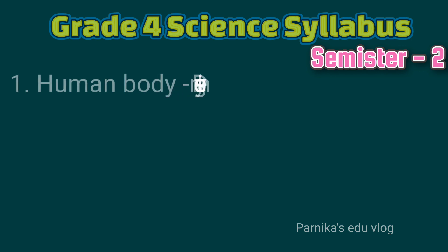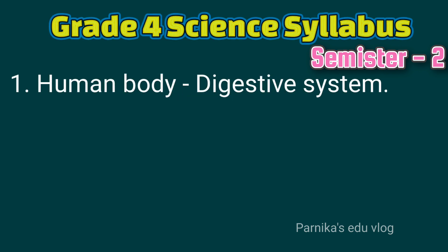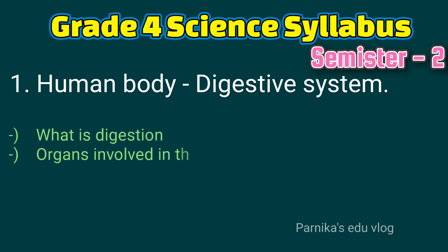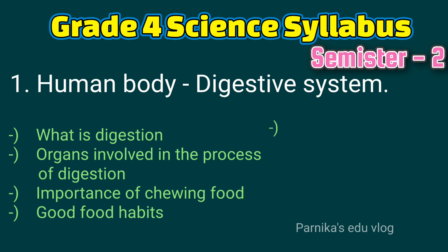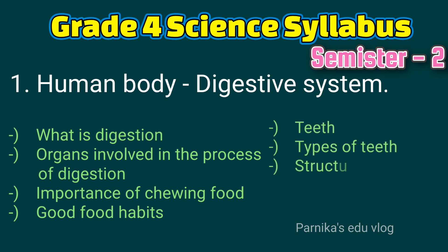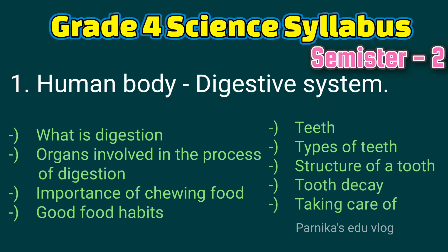The first lesson name is Human Body Digestive System. In this we have: what is digestion, organs involved in the process of digestion, importance of eating food, good food habits, teeth, types of teeth, structure of a tooth, tooth decay, and taking care of teeth.